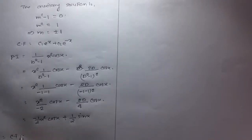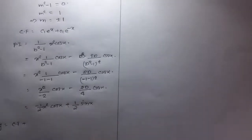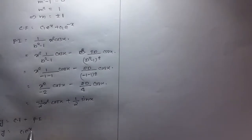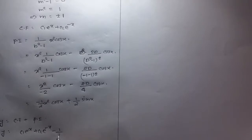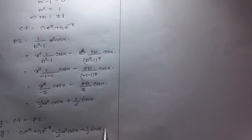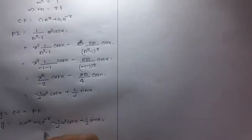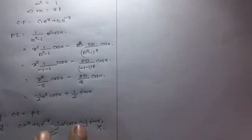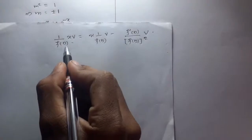So our (false) general solution is y = CF + PI = c₁eˣ + c₂e⁻ˣ - 1/2·x²cos(x) + 1/2·x·sin(x). However, this answer is wrong, because the formula 1/f(D) · x·v applies only to a linear factor in x, not x².